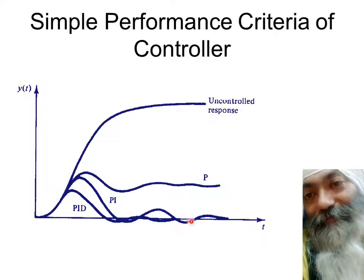PI control returns to the original point, but it has large overshoots and undershoots and can oscillate for a long duration before it settles down. This is further improved by adding the derivative term, giving PID control. The effect of derivative is that the oscillations are now lesser and they quickly die down. But here again, what should be the value of P, I, and D — that is, what should be the values of kc, tau_i, and tau_d?